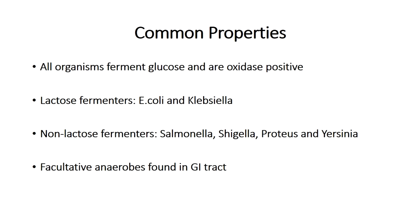So those are the growth properties of Enterobacteriaceae. Remember that they ferment glucose and are oxidase negative — these are common properties to all. You can then subcategorize them into lactose fermenters such as E. coli and Klebsiella, and non-lactose fermenters such as Shigella and Salmonella.